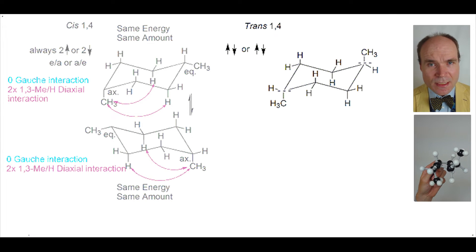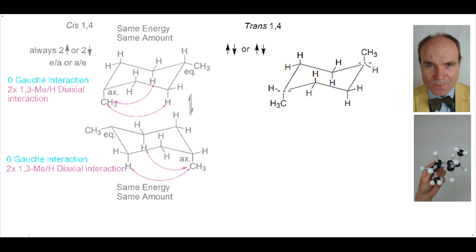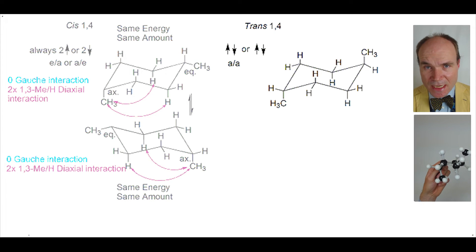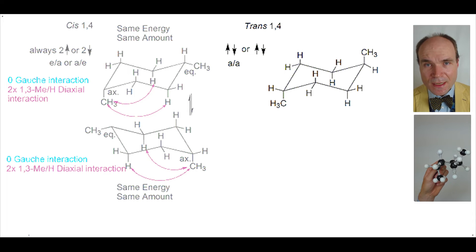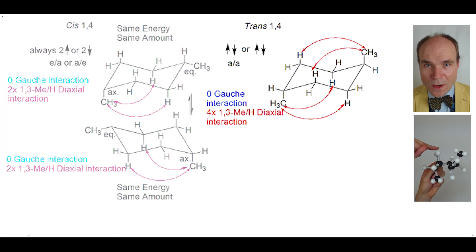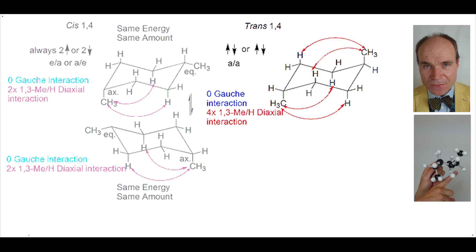As we look at this particular chair conformation, we can see that we have two axial methyl groups. When we seek to identify any steric strain within the conformation, we can find no gauche interactions, but four 1,3-diaxial interactions between hydrogen and methyl.